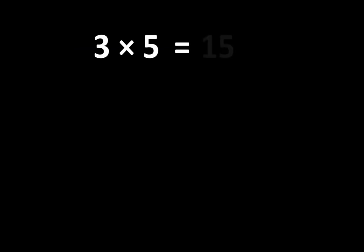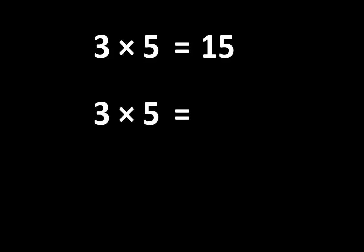3 times 5 is equal to 15. That is a very important mathematical idea, but here is an even more important mathematical idea: 3 times 5 is equal to 5 times 3. The order of the factors does not change the value.